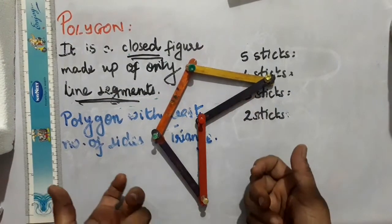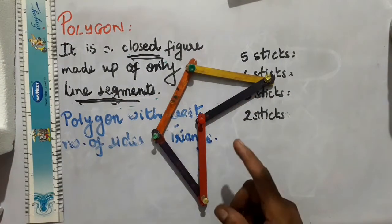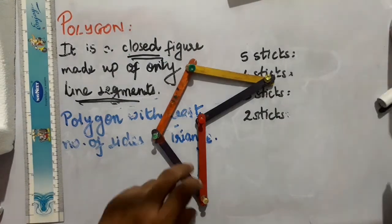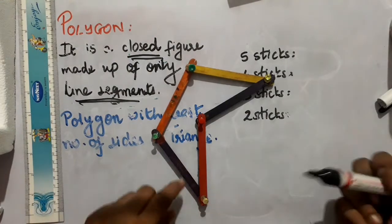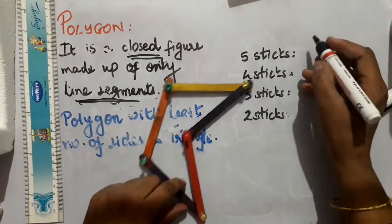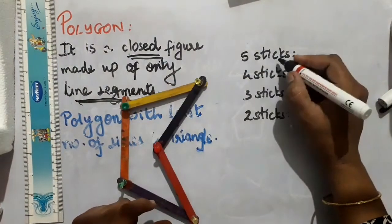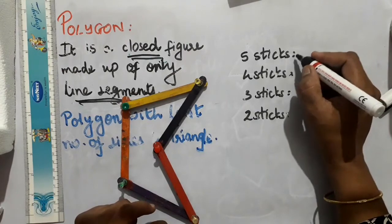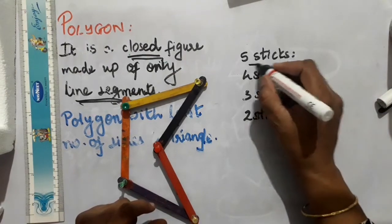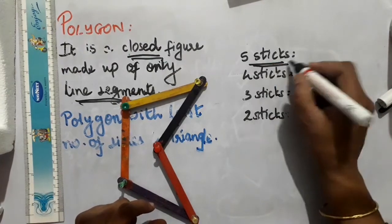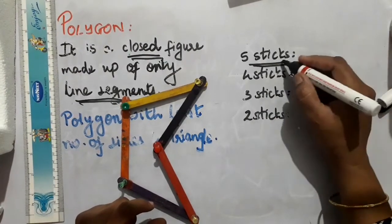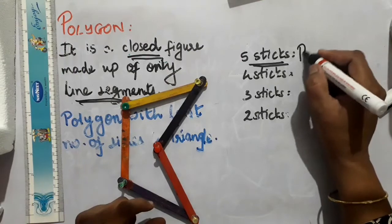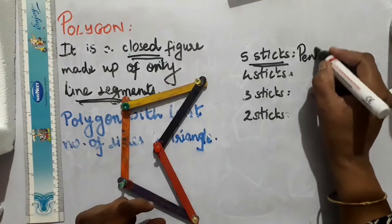Here you can see that I am able to form a closed figure using 5 sticks. With 5 sticks, a polygon is possible. And the polygon with 5 sides is known as a pentagon.